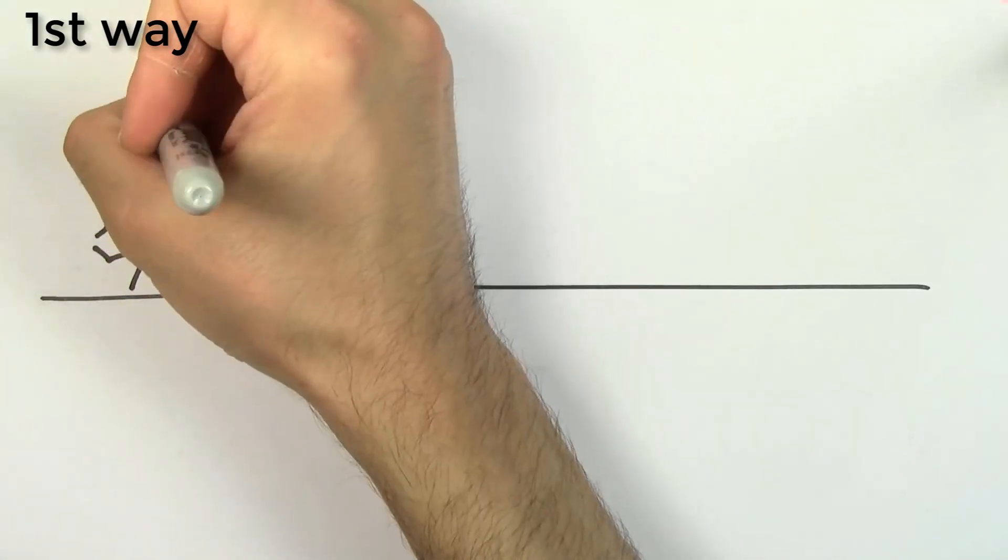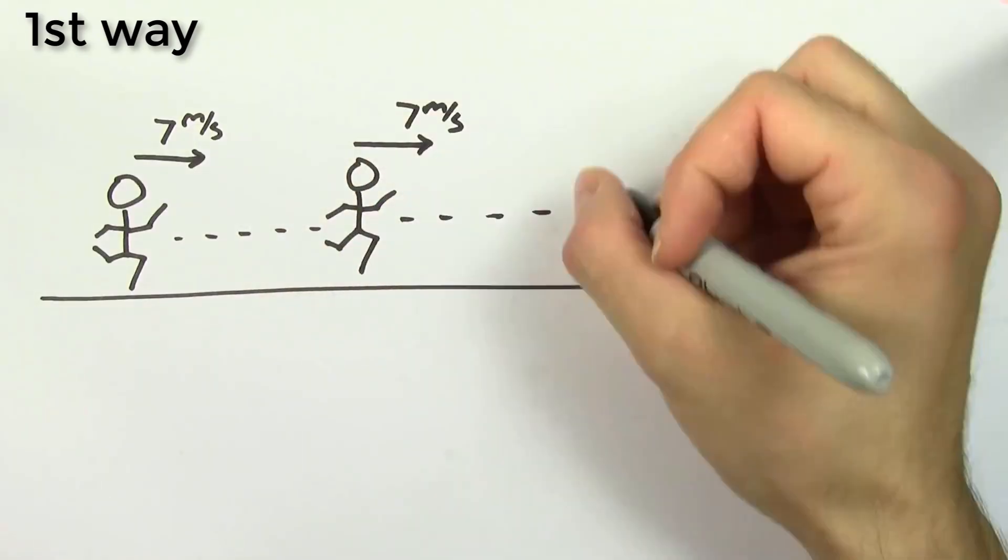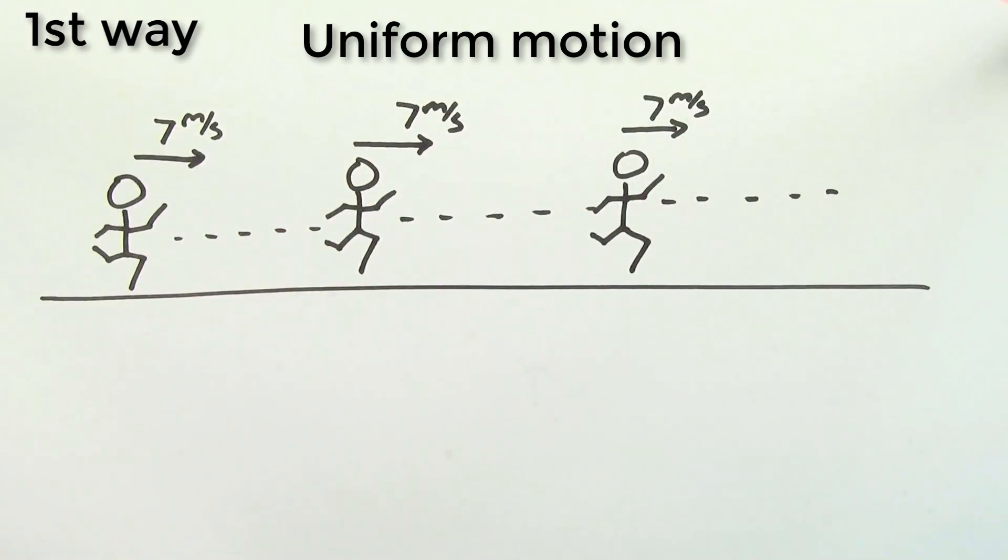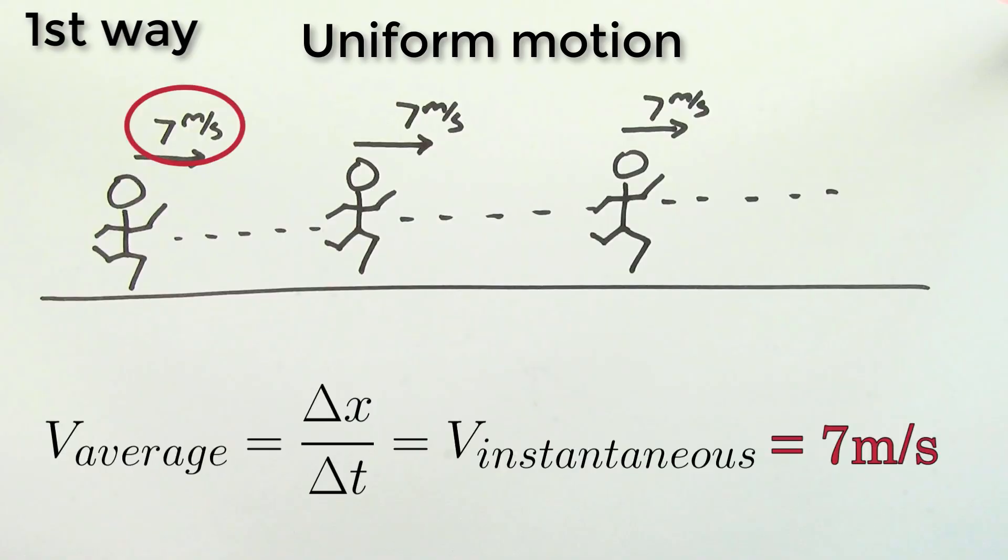The first way is so simple that it's kind of obvious. If you're lucky enough to have a case where the velocity of an object doesn't change, then the formula for average velocity is just going to give you the same number as the instantaneous velocity at any point in time.